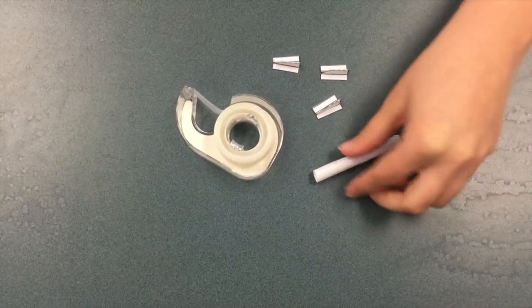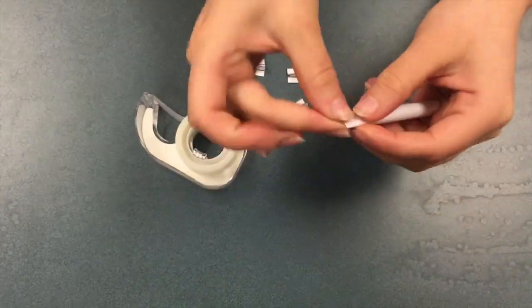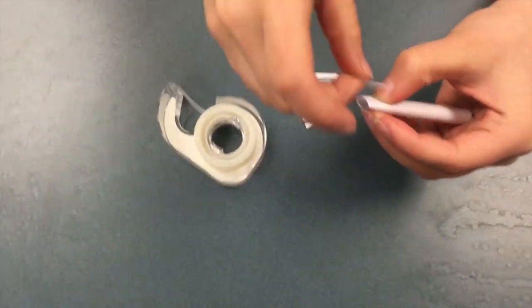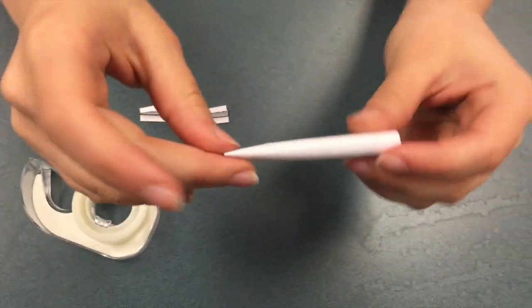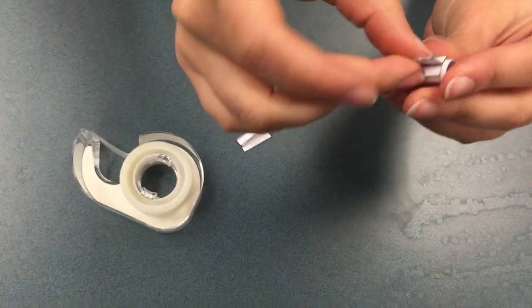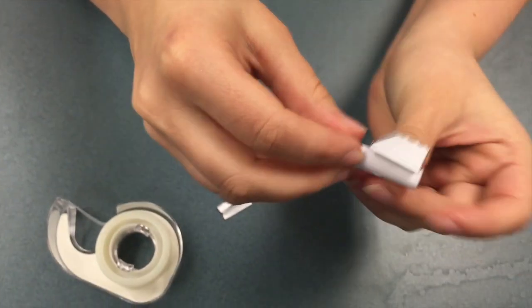So now we'll make our rocket. You take your paper tube and you pinch one end, alright? Then you will tape that end closed, like so, and you'll take your fins and you'll tape them onto your rocket like this, alright.